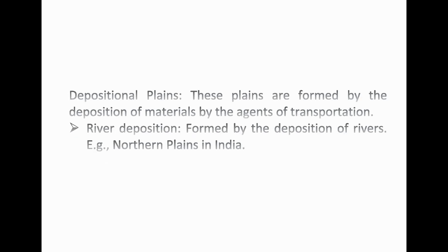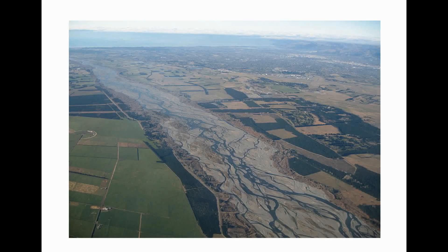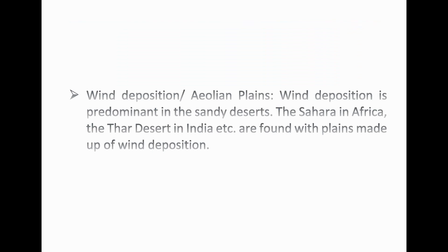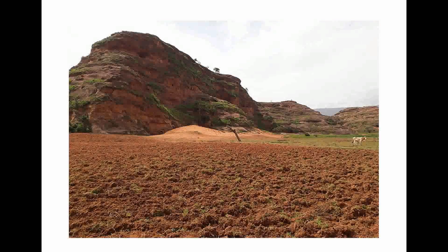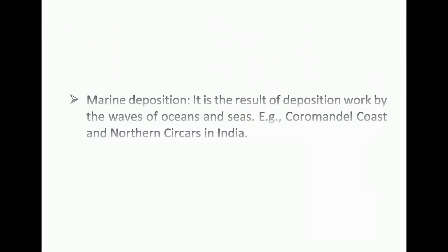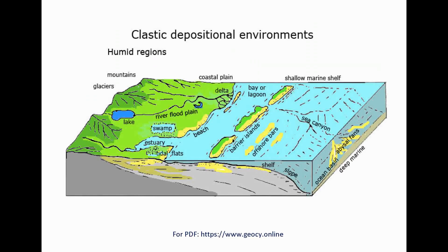Depositional plains are formed by the deposition of materials by agents of transportation. Alluvial plains are formed by the deposition of rivers — for example, the Northern Plains in India. Aeolian plains are formed where wind deposition is predominant, as in the Sahara in Africa and the Thar Desert in India. Marine deposition by waves of oceans and seas forms coastal plains, such as the Coromandel Coast and Northern Sarkars in India.